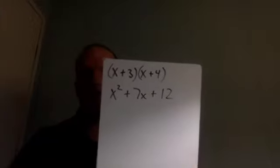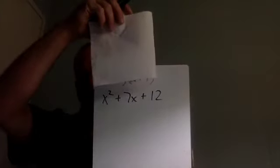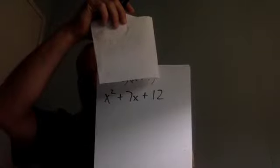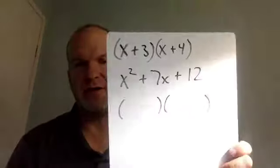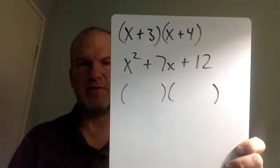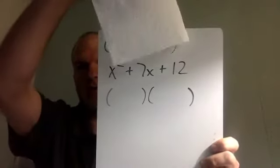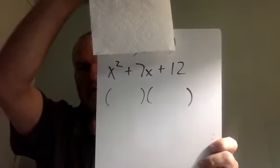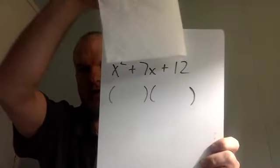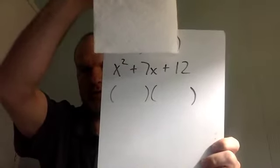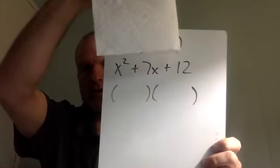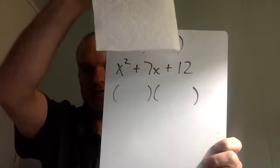Now, if you didn't have that first line and you had to factor X squared plus 7X plus 12, your answer would be two parentheses. It would be working backwards, right back to where you started. You're going to be given the answer, and you have to find what two parentheses were multiplied together to give this trinomial.